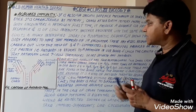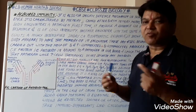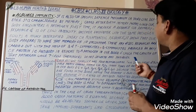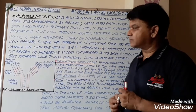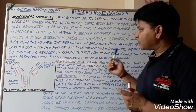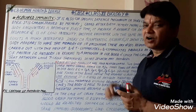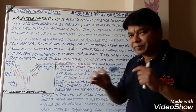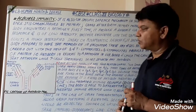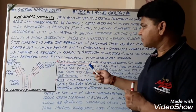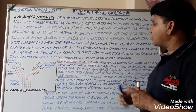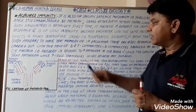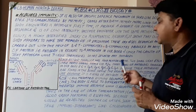B lymphocytes are produced inside the bone marrow, while T lymphocytes are produced inside the thymus. B lymphocytes produce an army of proteins called antibodies. T lymphocytes do not directly participate in forming antibody molecules. Antibodies act in response to a pathogen in our blood and check the growth of that pathogen, while T cells themselves do not secrete any antibody.